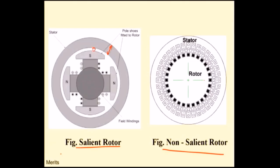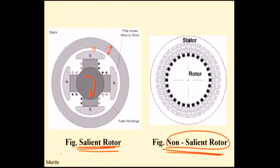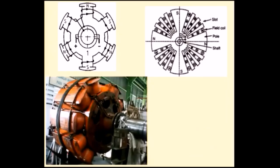In the salient pole rotor, the poles are projected, so if you rotate at high speed it produces more noise because the air gap is less. In non-salient pole rotors, we have noiseless operation. Also, the diameter of the salient rotor is more, which means the entire machine diameter is also more. The non-salient rotor has a smaller diameter and is of robust construction, whereas the salient pole rotor is not robust.